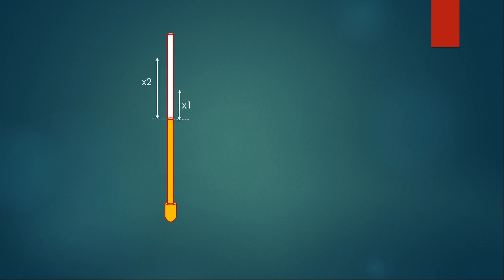I am going to mark the ice point expansion position as 0 degrees Celsius and the boiling point position as 100 degrees Celsius. So now I have two endpoints: 0 at the bottom and 100 at the top. In between I can divide it into 100 equal points and mark each as 1 degree Celsius.